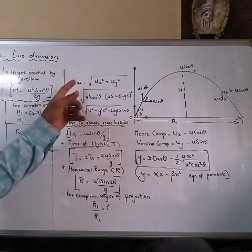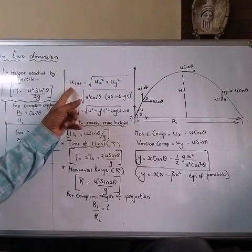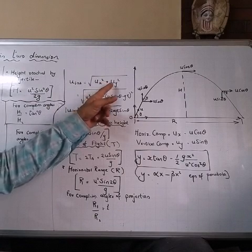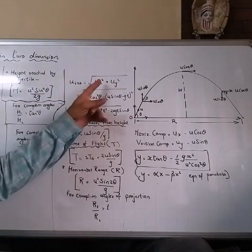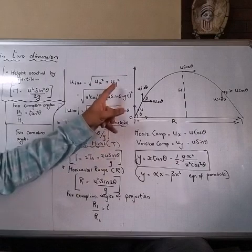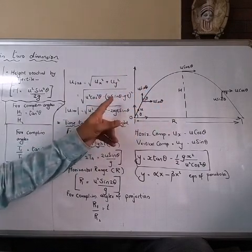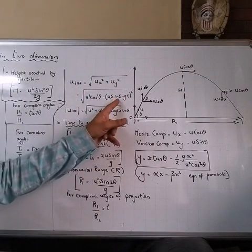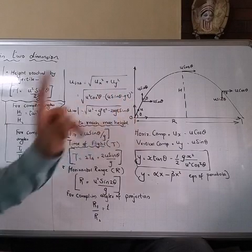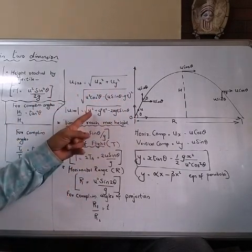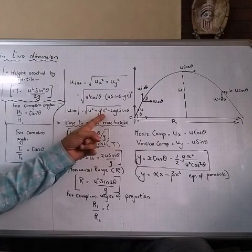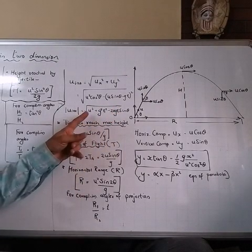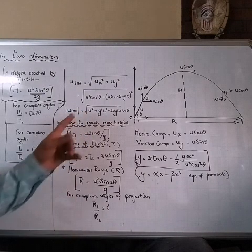If you want to find instantaneous velocity, we take the square root of ux² + uy². Here ux = u cos θ and uy = u sin θ − gt, because the vertical component is affected by acceleration due to gravity. When you square this, you get the final equation: u² + g²t² − 2ugt sin θ. This is the expression for instantaneous velocity.